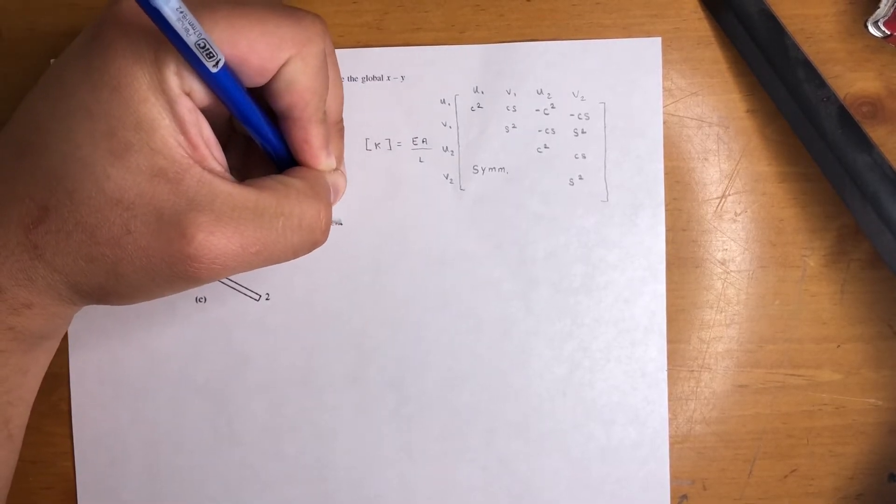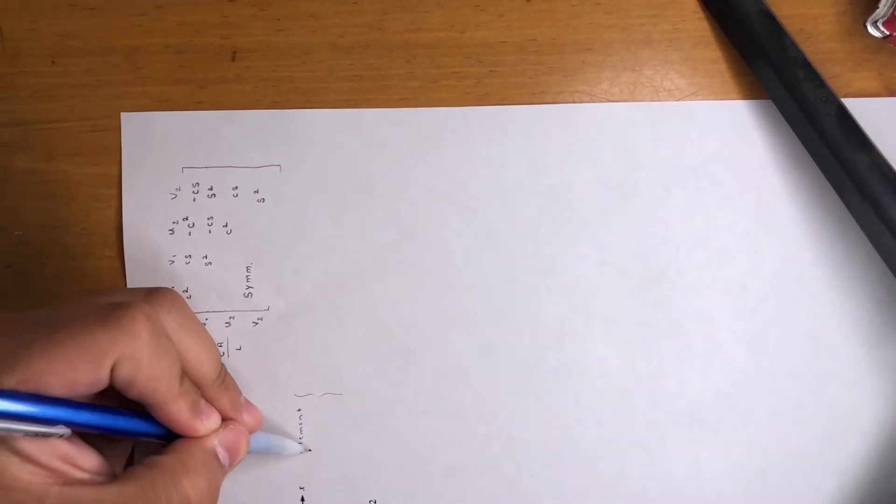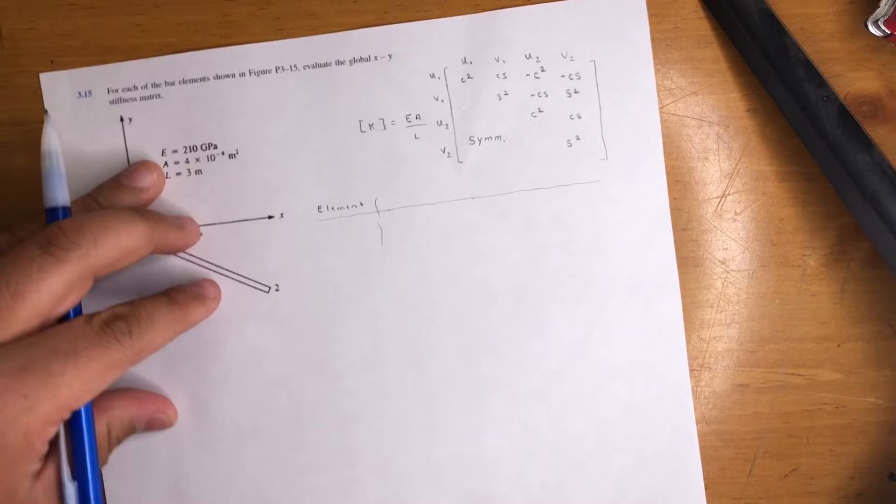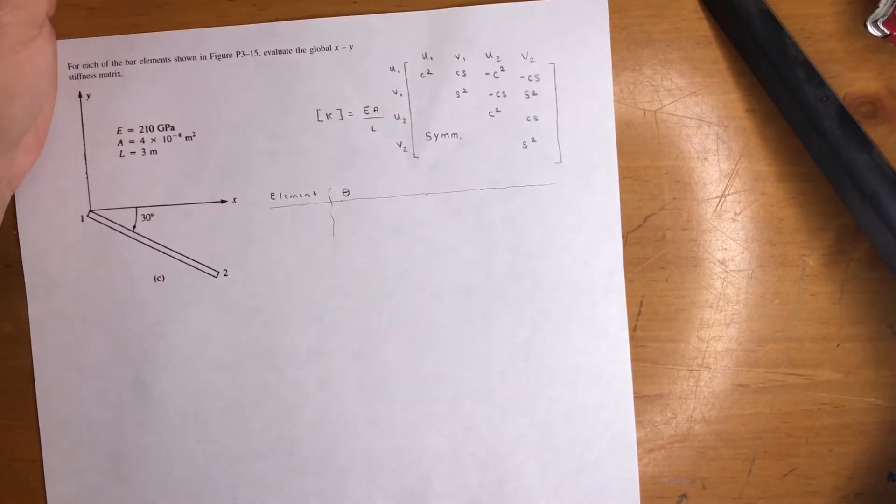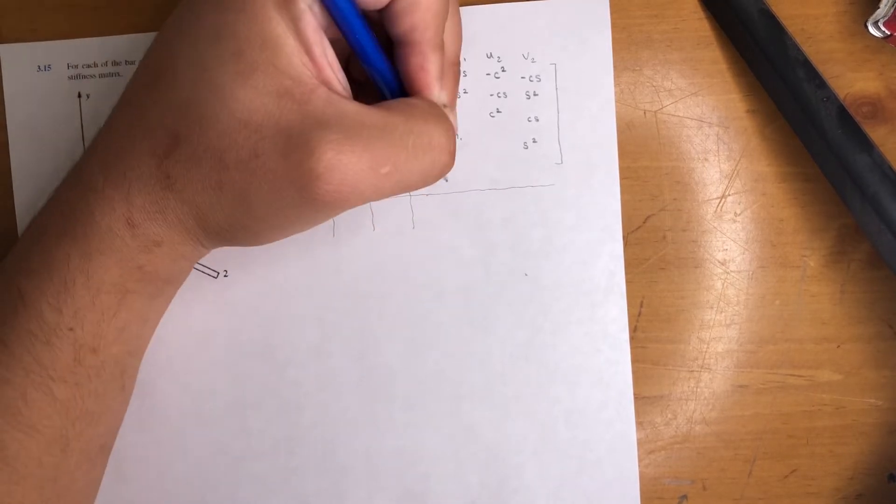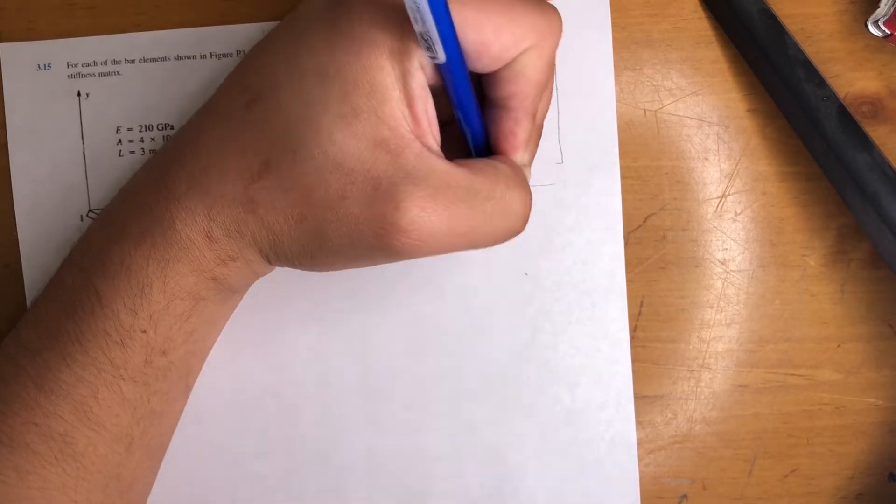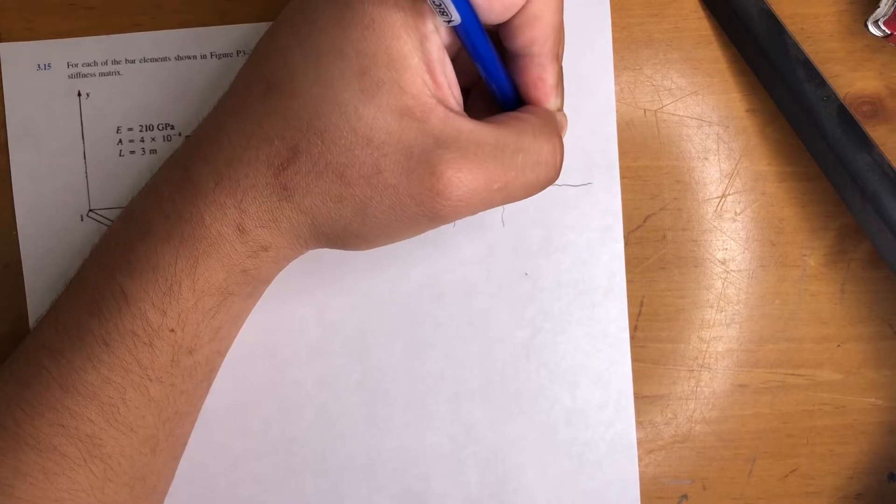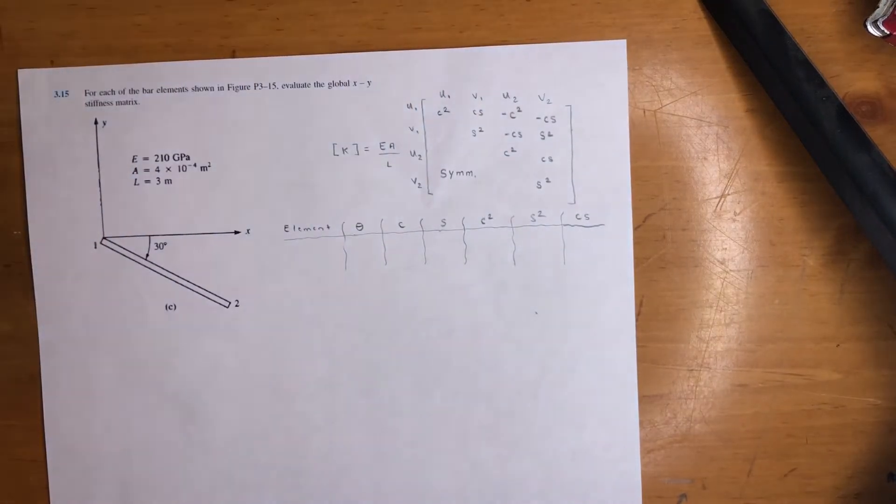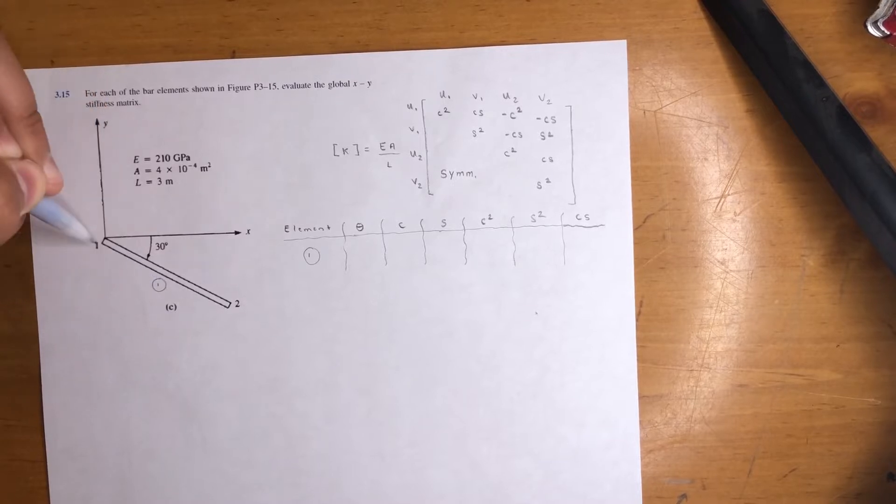So to start it off, if you watch the other videos you already know - start with the element. Let me just draw a little table. So for each element, in this case we only have one, we're gonna get the theta of that angle, cosine of the angle, sine, cosine squared, sine squared, and finally cosine times sine. It's for each element. In this case when you have one element, it's this bar right here from one to two.